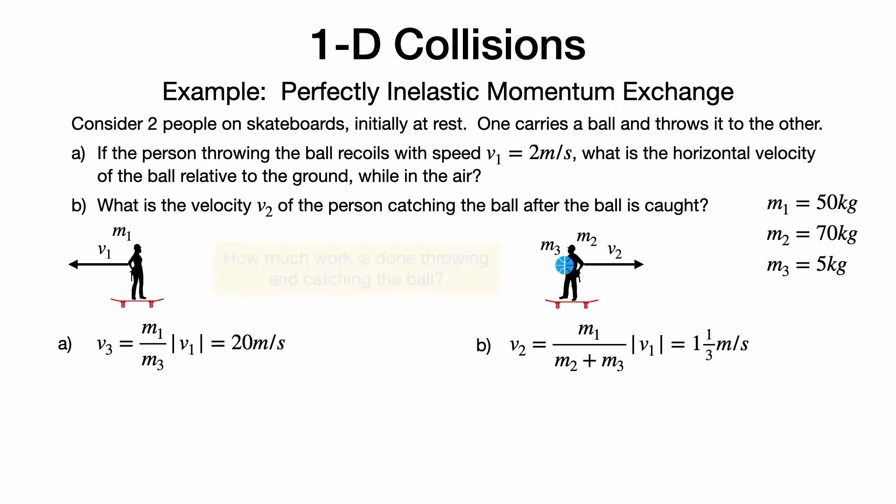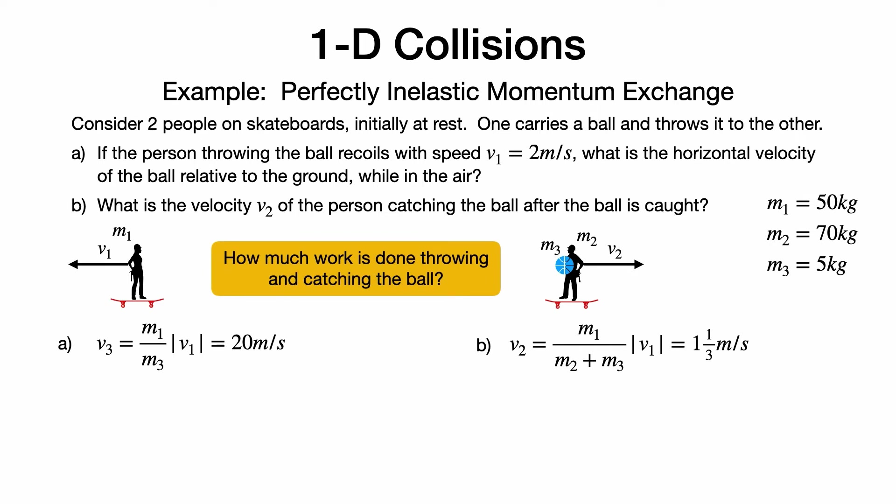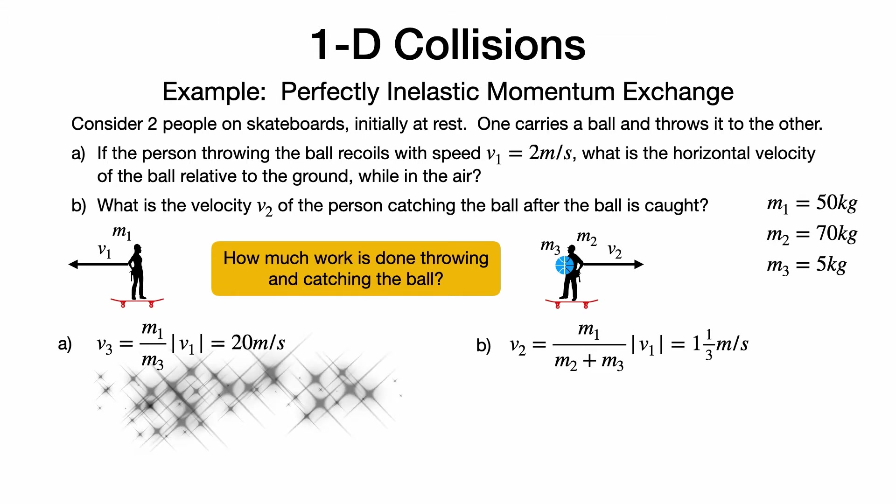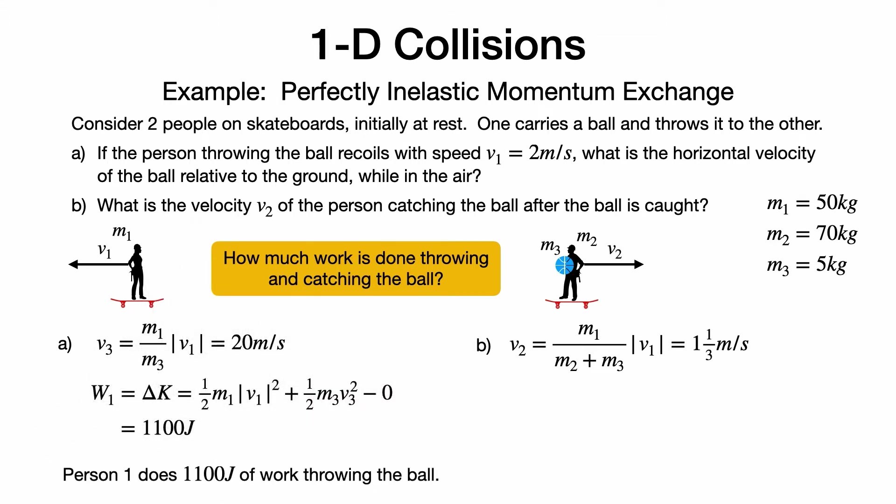Notice that we did not need to use any energy arguments to determine the final velocities of the person and ball, or the intermediate velocity of the ball in flight. On the other hand, we can use energy arguments to determine how much work was done throwing and catching the ball. When the ball was thrown, the change in kinetic energy equals the work done by the person throwing it: one-half M1 V1 squared plus one-half M3 V3 squared, minus zero for the initial kinetic energy. Calculating the numbers, the work done by the person throwing the ball is 1,100 joules.